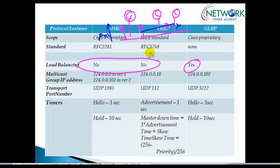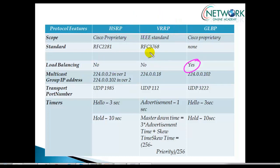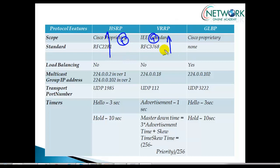We did some advanced HSRP implementations where we created two groups — one gateway is primary for one group and another is primary for the other group — but for a single group both cannot be forwarding simultaneously. That is something supported in GLBP, and we'll get into that in more detail in this section.